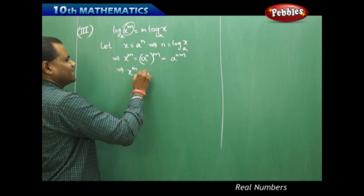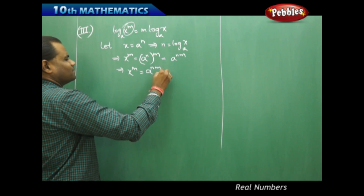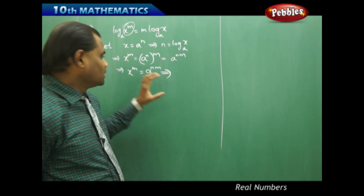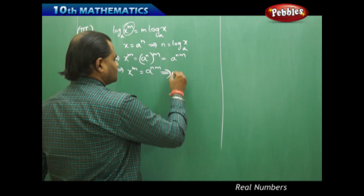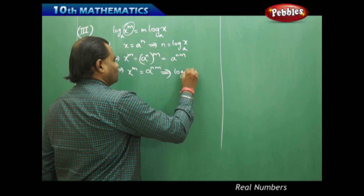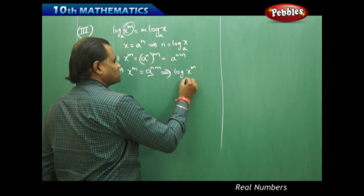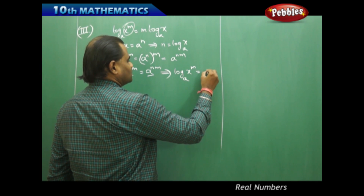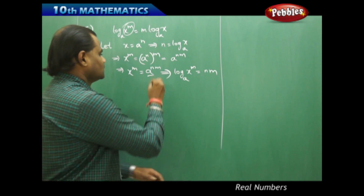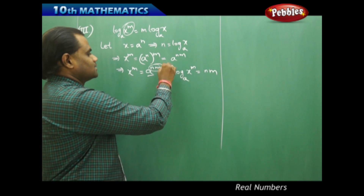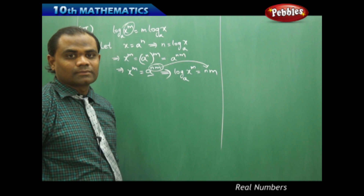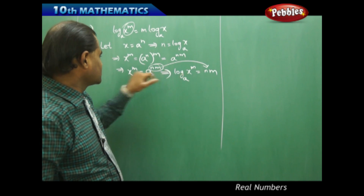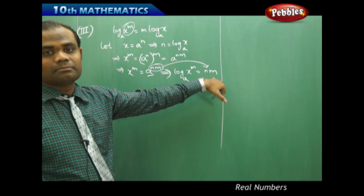That implies finally I get x to the power m equals a to the power nm. So when I convert this exponential to logarithmic form — using a equals b to the power c — then log(x^m) to the base a will directly be equal to nm. Therefore this exponent gets converted to the logarithmic equation as log(x^m) to the base a equal to nm.